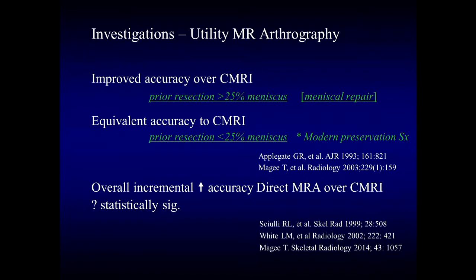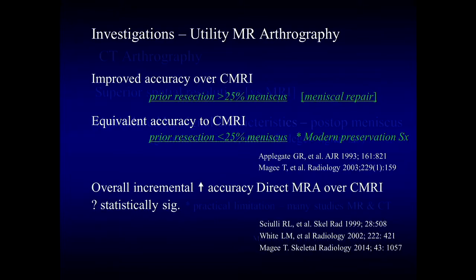Importantly, studies have shown that conventional MR imaging is just as accurate as MR arthrography in assessment of the postoperative meniscus in the setting of prior resection of less than 25% of the meniscus — a common postoperative scenario, since surgeons try to resect as little meniscal tissue as possible. Overall, there may be a mild incremental increase in accuracy of direct MR arthrography over conventional MR imaging, but studies to date have still not shown a statistically significant difference or benefit of MR arthrography compared to conventional MR imaging in all patients after prior meniscal surgery.